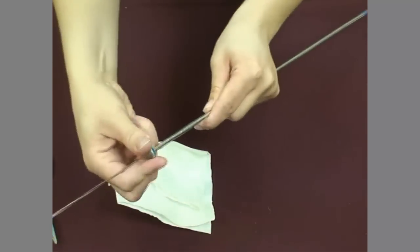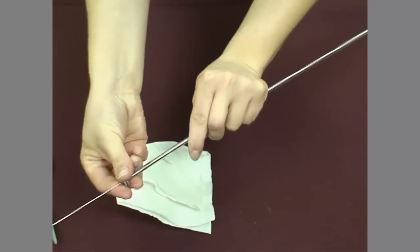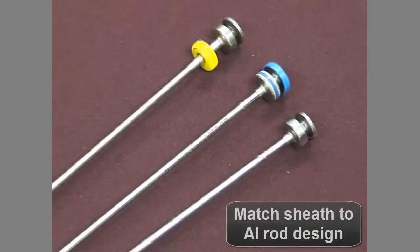Make sure ahead of the insemination session that the correct sheath design is matched with the rod type to be used. Depending on the rod design, the sheath is secured at the base by either screwing it down in a twisting motion or pushing it down through a donut-shaped retainer.